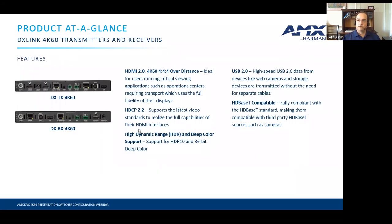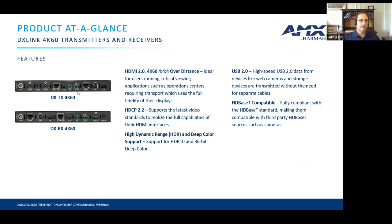Moving on to the DX Link transmitters and receivers — these are the new 4K 6444 units. They support HDMI 2.0, HDCP 2.2, and full 4K60 4:4:4, just like the HDMI inputs and outputs on the DVX. They also support full USB 2.0 pass-through, not just HID pass-through.